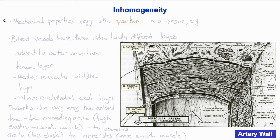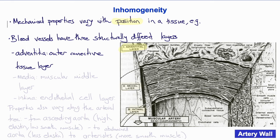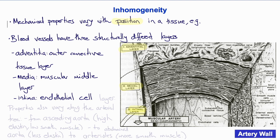Another important property of soft tissues is that they are inhomogeneous, meaning the mechanical properties vary from place to place. An excellent example are blood vessels that have three structurally different layers with different properties. The outer layer is called the adventitia and consists primarily of connective tissues like collagen and elastin. The middle layer or media is the muscular layer where smooth muscle cells are concentrated. The inner layer or intima is a single layer of endothelial cells, important for how blood vessels respond to mechanical stresses and contraction stimuli, but mechanically it doesn't contribute much to the stress in the vessel.